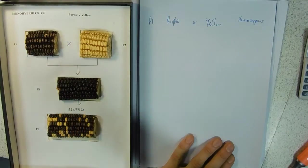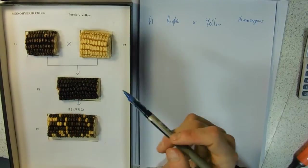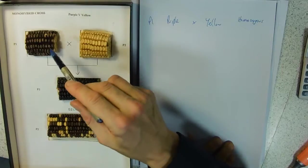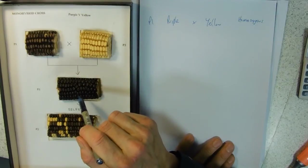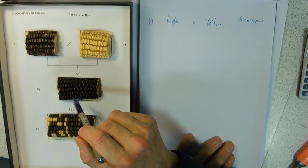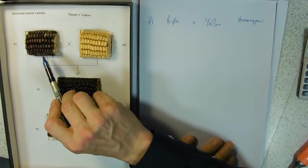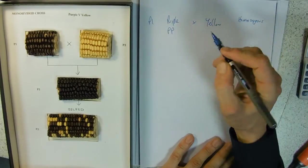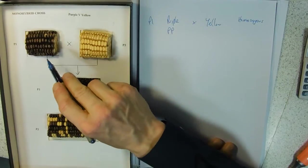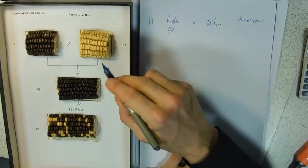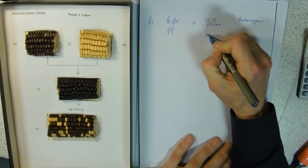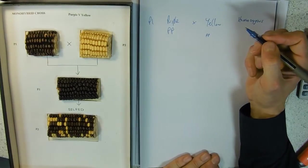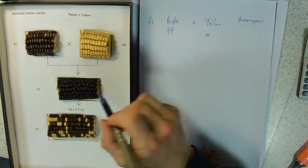The genotypes of these pure breeding plants - we need to give the gene a letter. When we cross these we get all purple plants, so the dominant is purple. I'm going to give that a big P for the dominant allele and little p for the recessive allele.